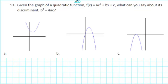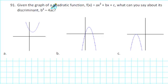Given the graph of a quadratic function f(x) = ax² + bx + c, what can you say about its discriminant b² - 4ac?